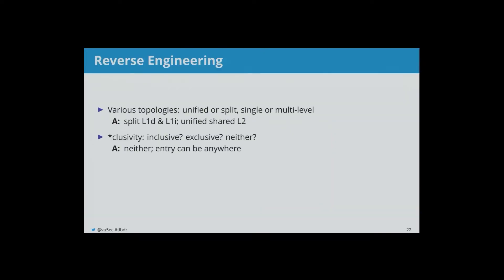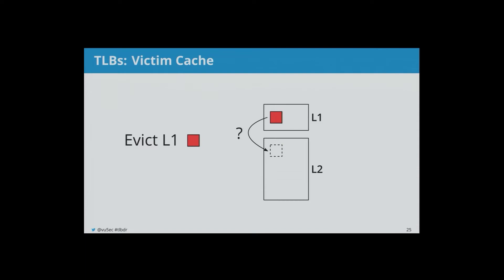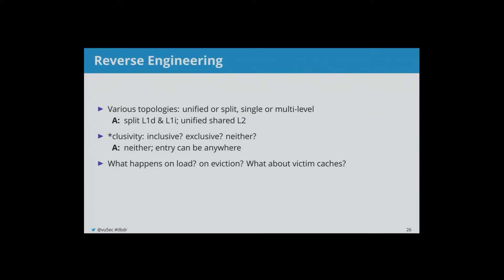Intel CPUs use 'neither' — an entry can be anywhere. Third, what happens on loads and evictions? On Intel, a load populates both levels. For evictions, all evictions get dropped — no victim caches, meaning evicted entries from L1 are not pushed back into L2.